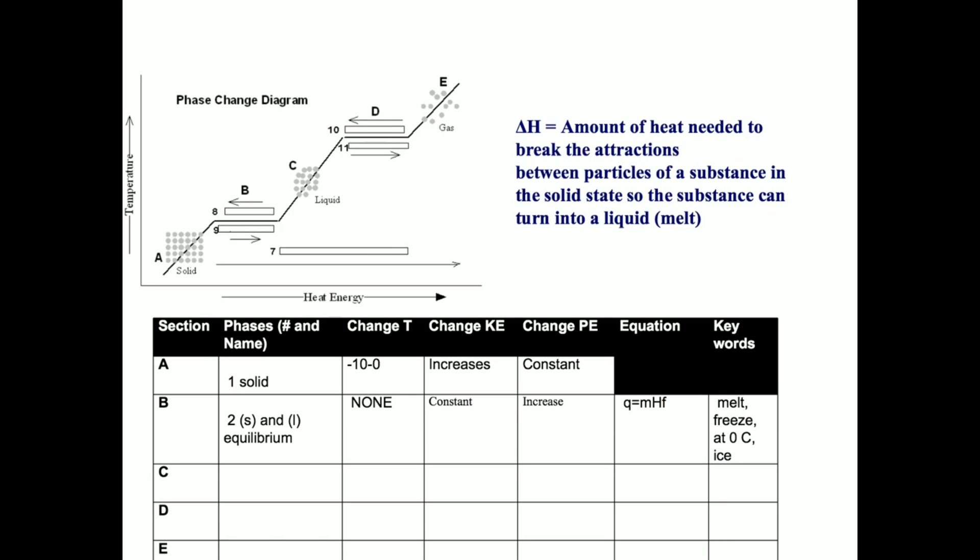Now here, in section B, we have reached the melting point. Here, the temperature is actually constant. Imagine if you had ice and water. As the ice is melting, the water cannot get any warmer until all the ice has melted. So here, the temperature is constant. But our potential energy is increasing as more and more of the particles are changing from the solid phase to the liquid phase.